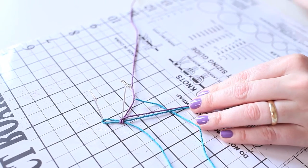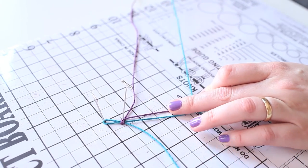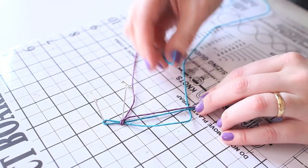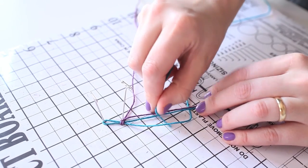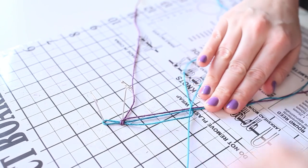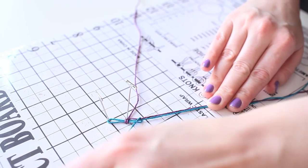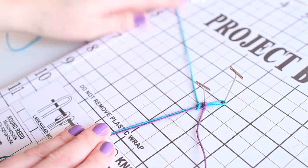This is called the half hitch knot. So we bring it behind those middle strands like so, and then we bring it over the front of the middle strands and back through itself to form the first knot.